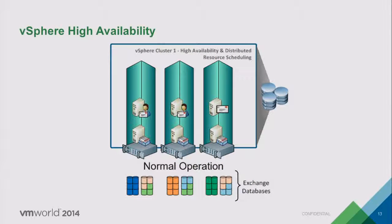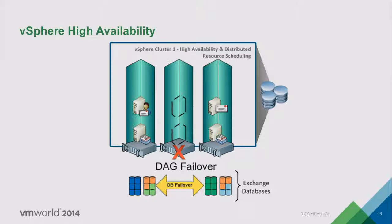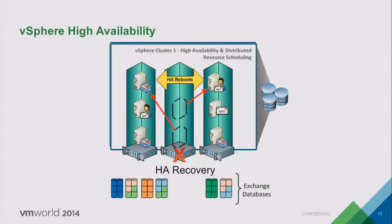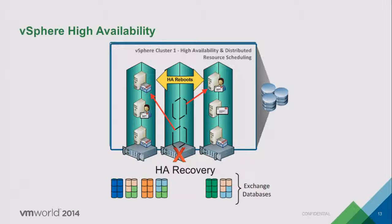With a three-host ESX cluster and DAG-configured mailbox servers, if one ESX host goes down, vSphere HA will instantaneously restart all VMs on that dead server — they come up, join DAG, and within five minutes you have continuous protection without doing anything. Best practice: size the vSphere cluster to DAG nodes plus one, so when a host fails, the VM can restart on a host that doesn't already have another member of the same DAG.